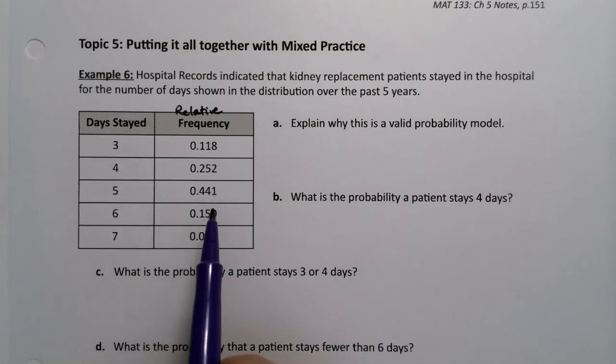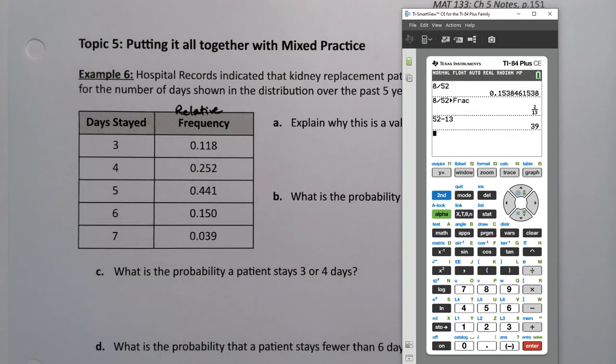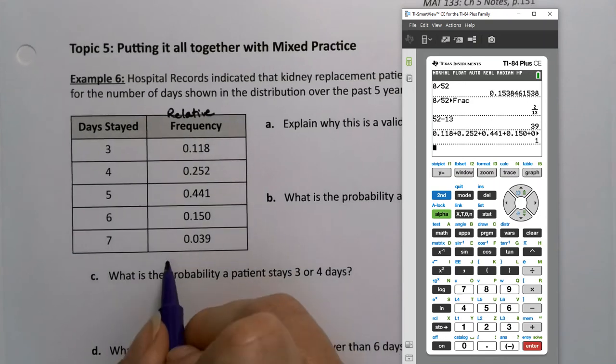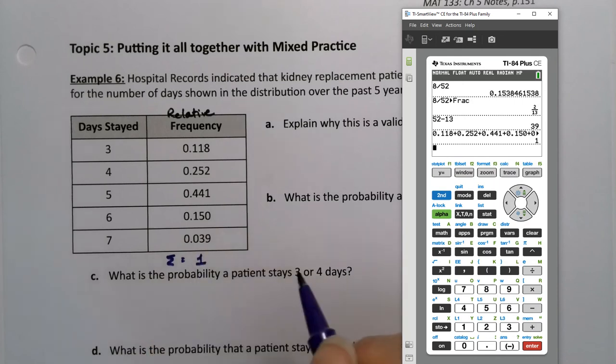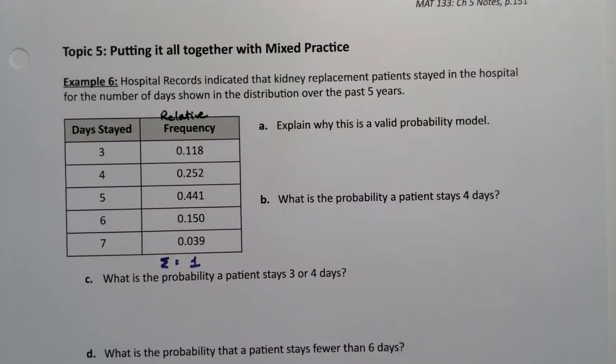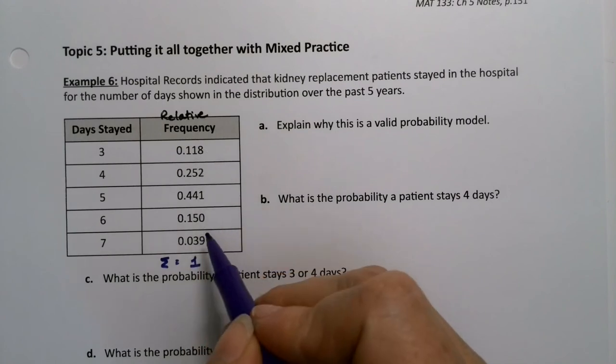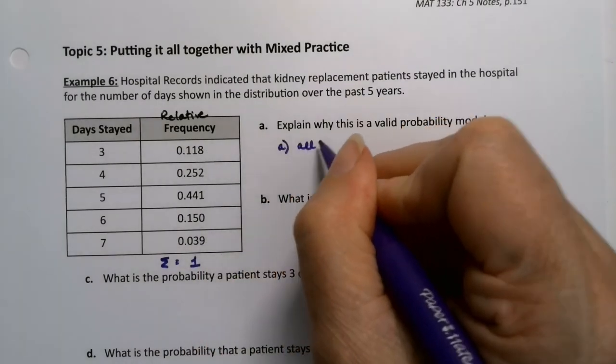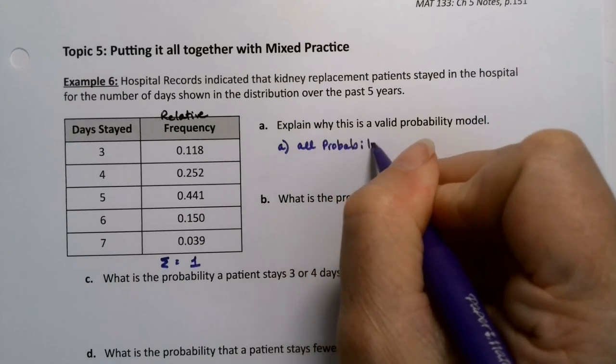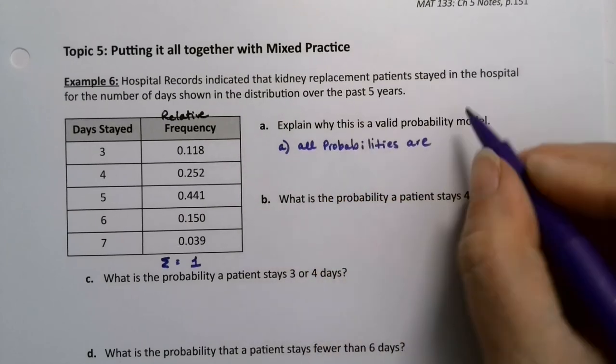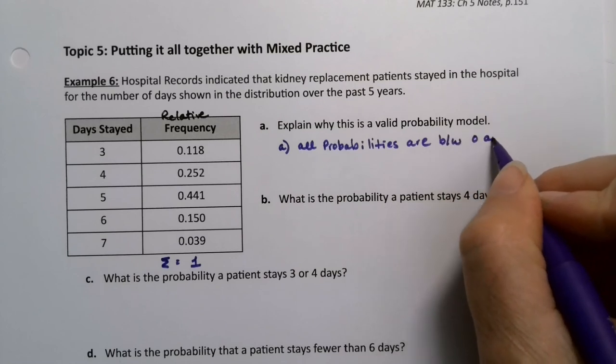There are two components that make it a valid probability model. One, we need to check that the sum of the probabilities is 1. I'm going to grab a calculator, or you could grab Desmos. I want to check that the probabilities here make 1, or they should be very close to 1. They do make 1. So the sum of these probabilities, the sum of these relative frequencies is 1, which is great because then we note all the probabilities are between 0 and 1.